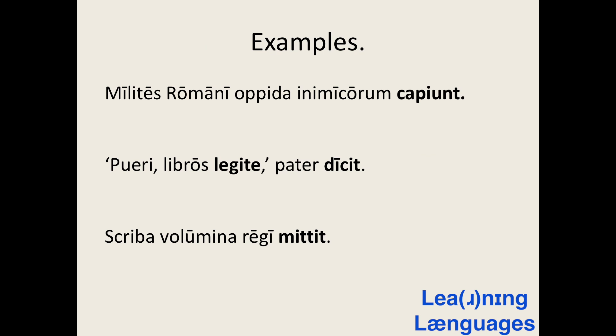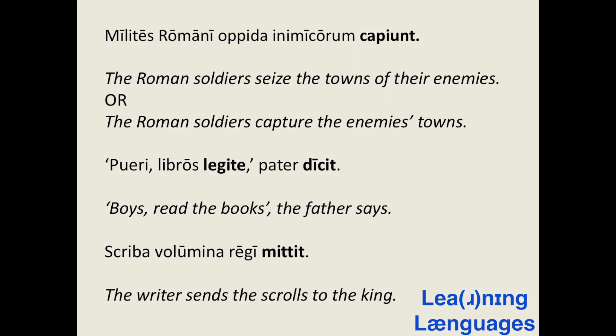Here are three examples of sentences which use third conjugation verbs. The verbs are in bold. Pause the video and see if you can translate each of these sentences. The first sentence is: milites romani opida inimicorum capiunt — the verb is capiunt, meaning 'they seize' or 'they capture.' This translates as: the Roman soldiers capture the towns of the enemies. The second sentence: pueri libros legite, pater dicit — boys, read the books, the father says.